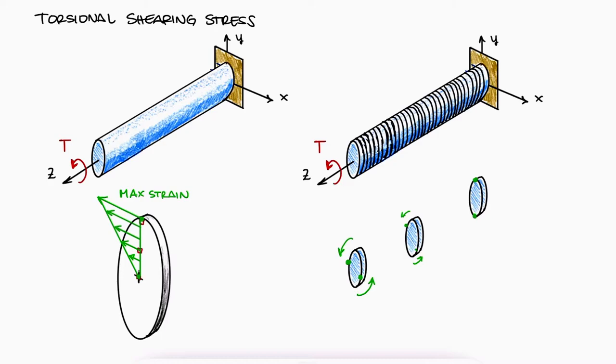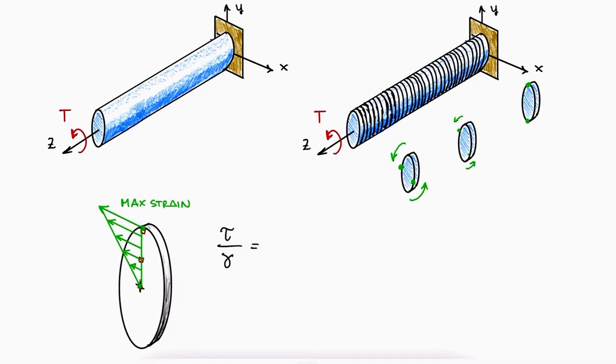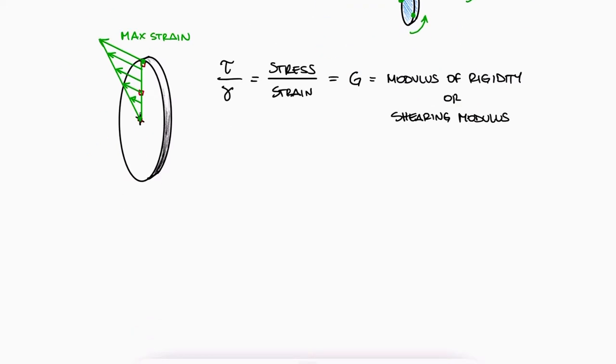Now, if you remember from the shearing strain main lecture video, if we're in the elastic region of deformation, the shearing strain and the shearing stress are linearly proportional by what we call the modulus of rigidity or the shearing modulus. Therefore, the shearing stress profile is also a straight line that goes from zero to a maximum value at the surface that we call tau max. And again, this is true for any disk element we analyze.